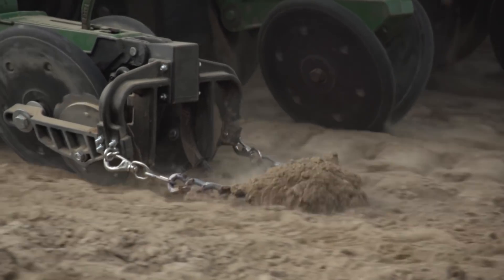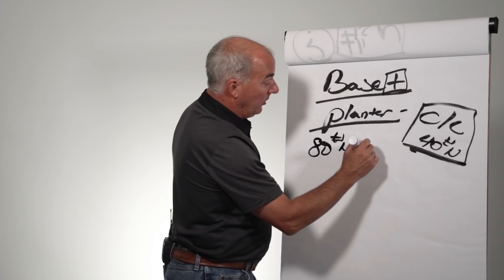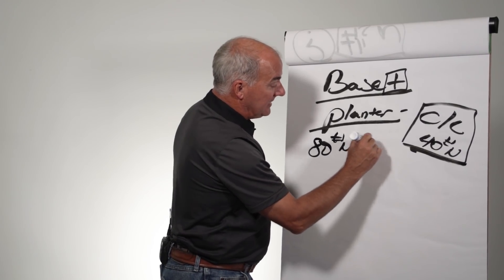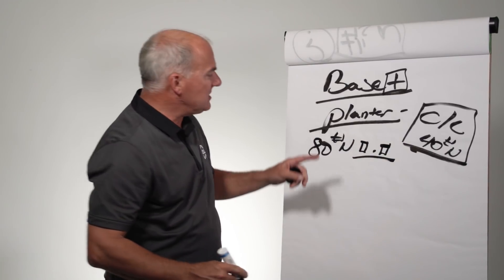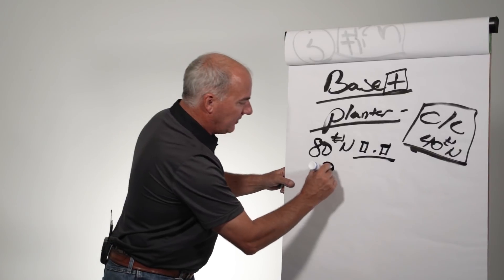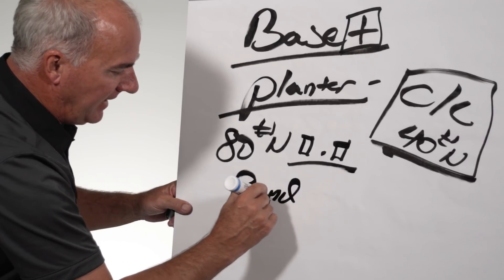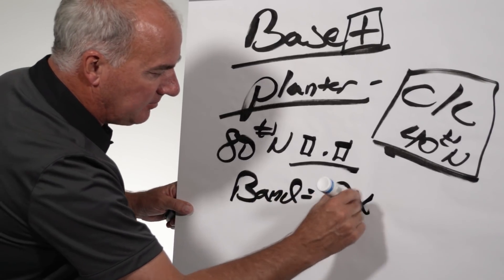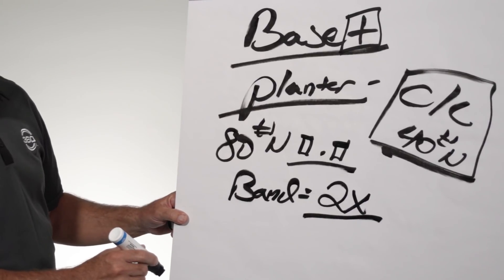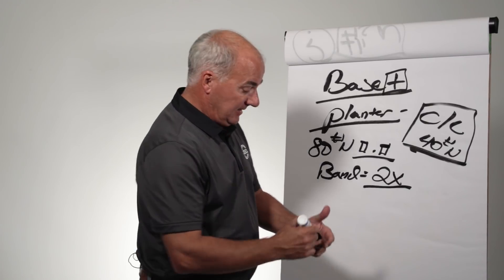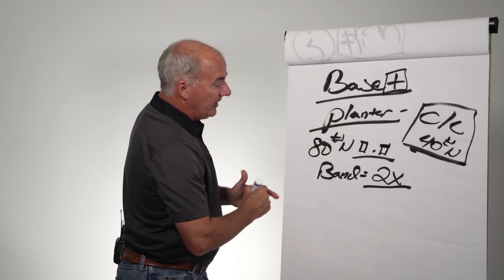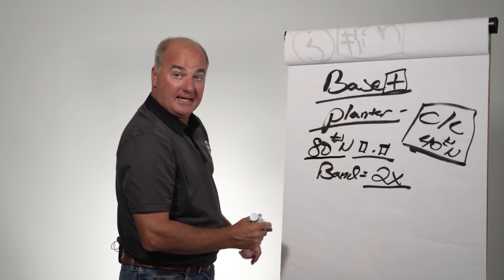In our case, we're going to come in with 80 pounds of banded N and we're going to have it 40 on each side of that seed. That's where we're going to start the efficiency of a band with a planter. When you come in with a band on the planter, we consider that to be 2X of value over a broadcast in the spring. We're going to put 80 pounds on at planting.